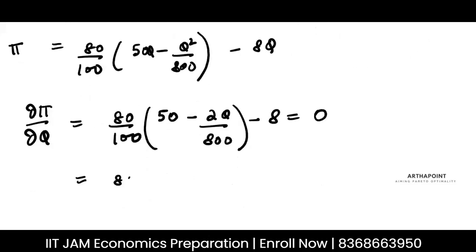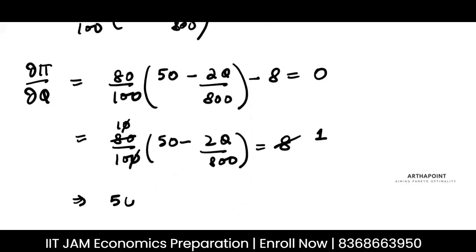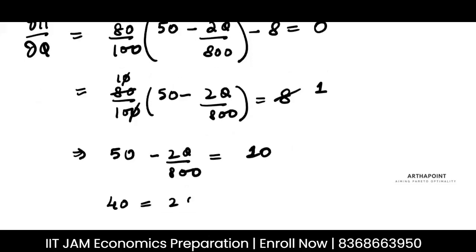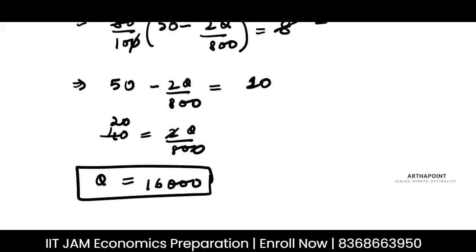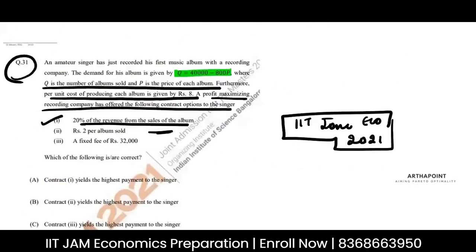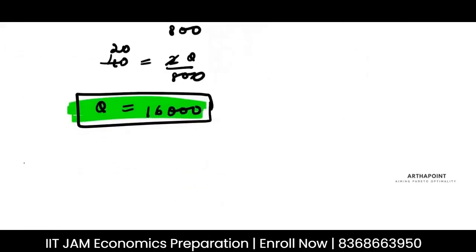So this becomes (80/100)(50 − 2Q/800) = 8. The 80/100 cancels and simplifies: 50 − 2Q/800 = 10. Therefore 40 = 2Q/800, which gives Q = 16,000. So this is the equilibrium quantity — the equilibrium number of albums.